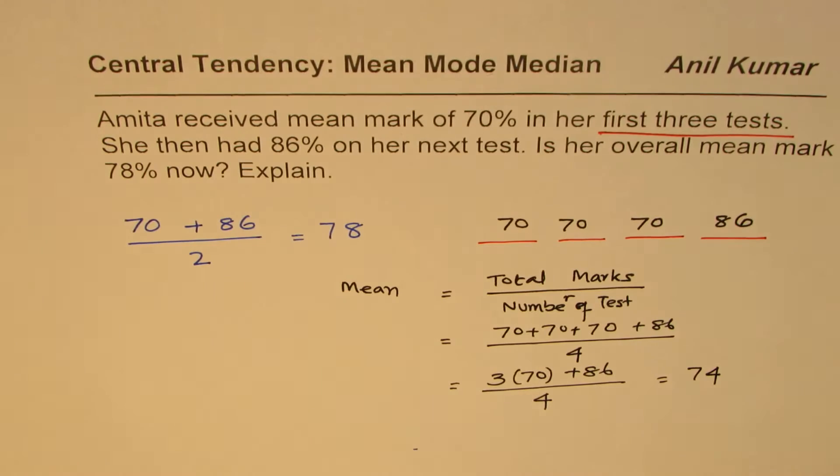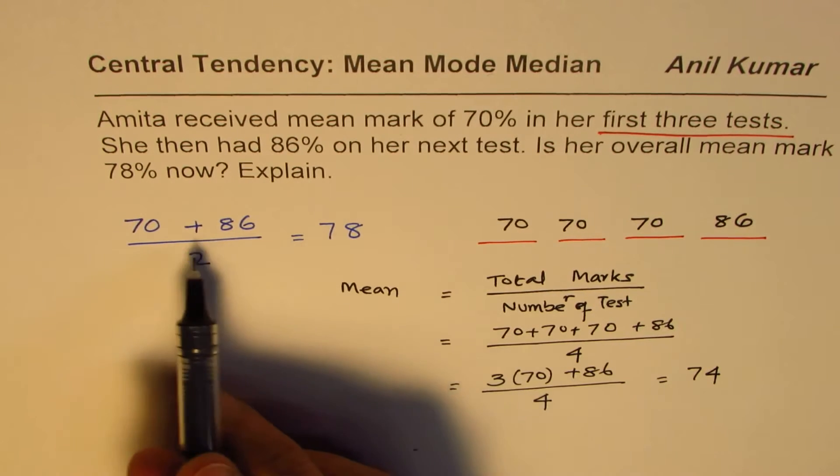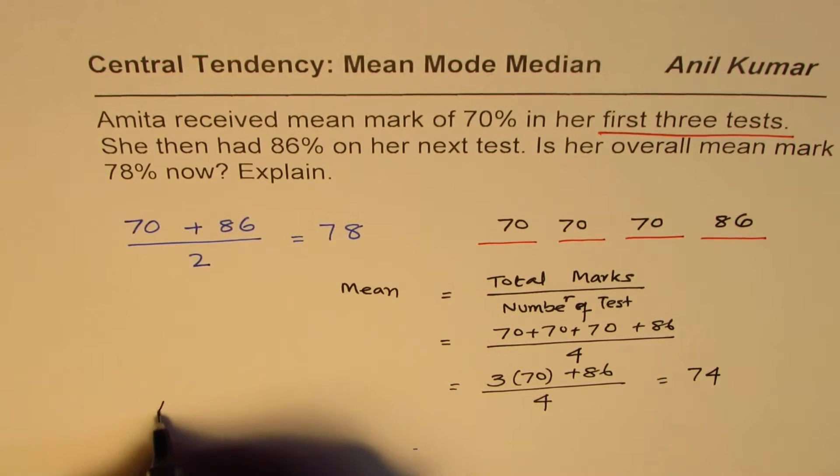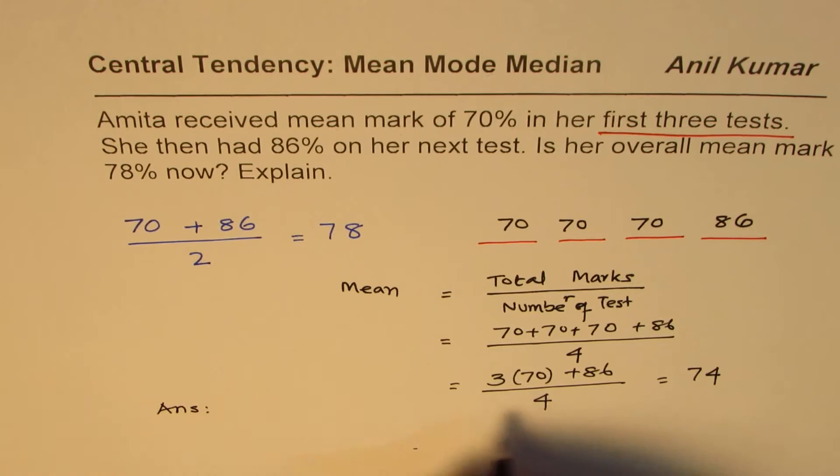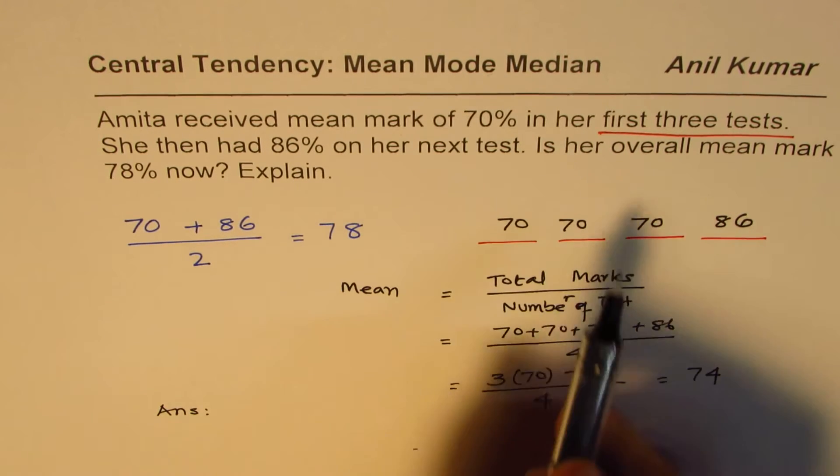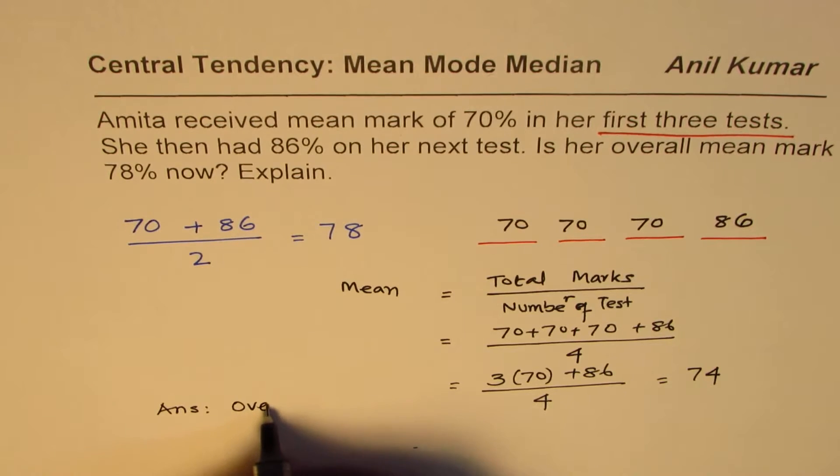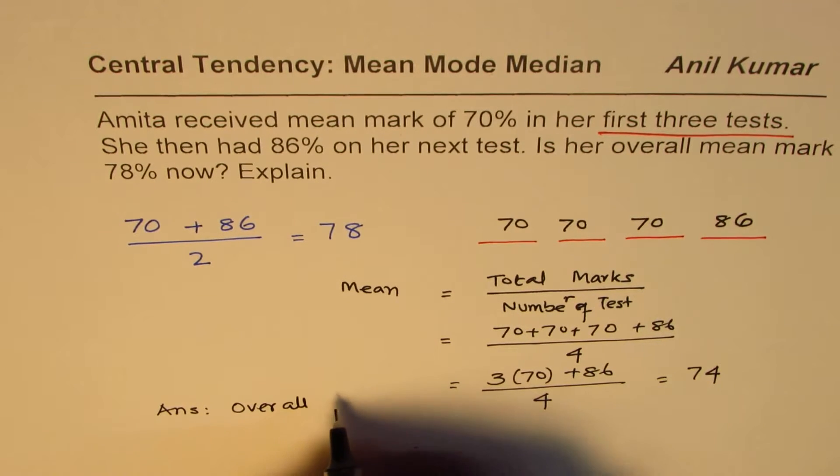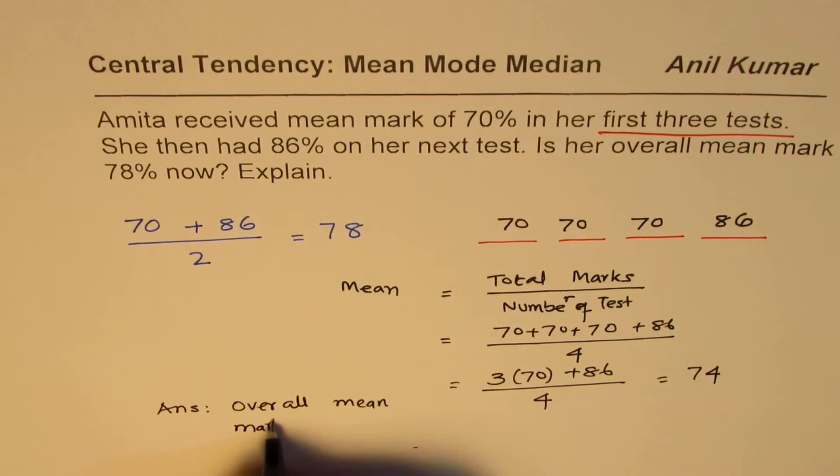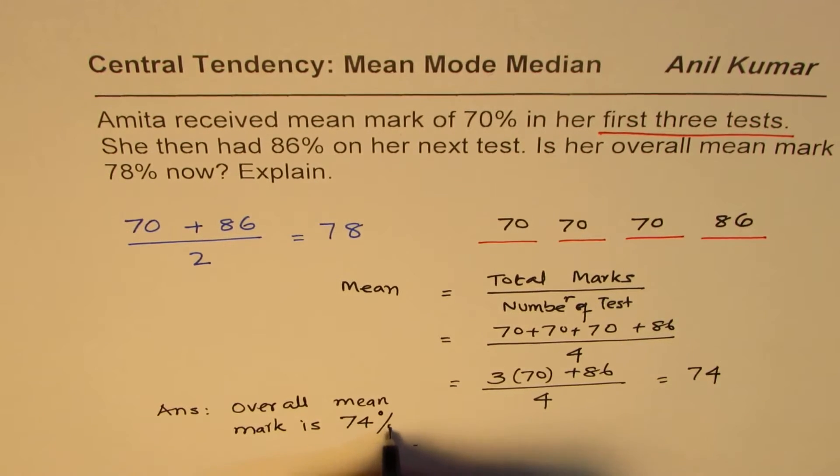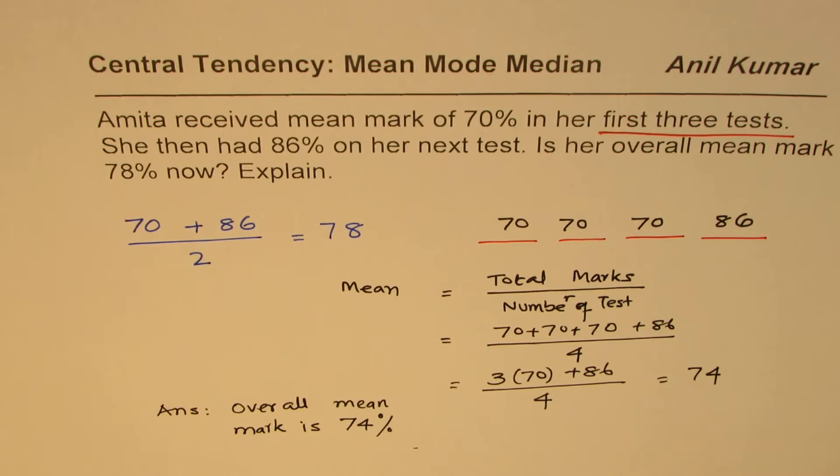So this is incorrect. So our answer is that the overall mean mark is 74. So that is very important to understand, and I hope this helps you to understand.